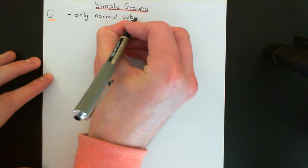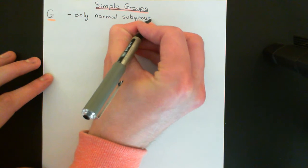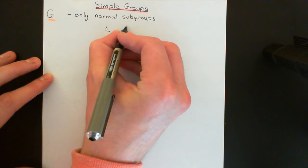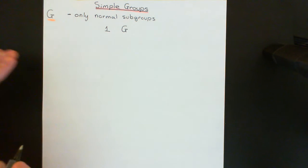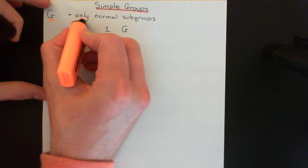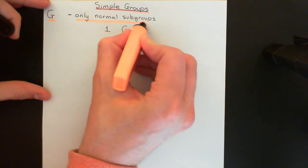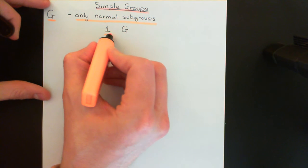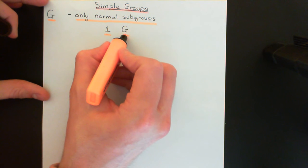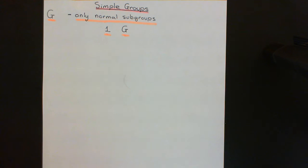So the only normal subgroups are the trivial subgroup, which I'll denote 1 here, and the improper subgroup, which I'll denote G here. That's the criterion for being a simple group. Loads of groups will have other subgroups that are normal — not the trivial or improper subgroup — and therefore will not be simple groups.